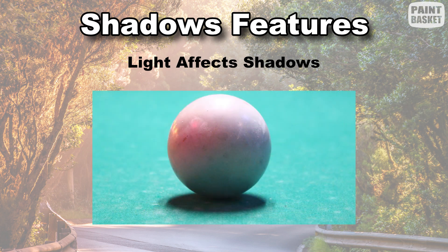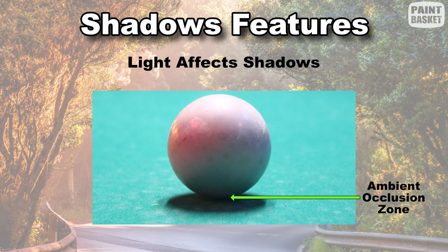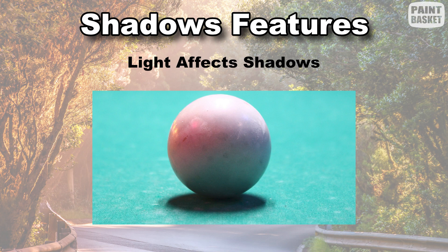The area where neither direct, ambient, nor reflected light can reach is the darkest dark area. This area has a fancy name — it's called the ambient occlusion zone, which basically means not even ambient light can reach there. What's interesting about an ambient occlusion zone is that you'll often find that you can't see where one object starts and the other one stops, which makes for very interesting shadow areas.